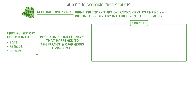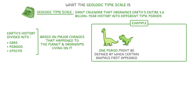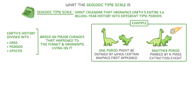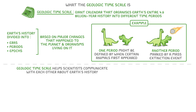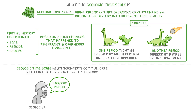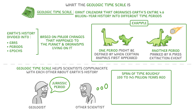For example, one period might be defined by when certain animals first appeared, whilst another period might be marked by a mass extinction event. A really useful thing about the geologic timescale is that it helps scientists communicate with each other about Earth's history. For instance, when a geologist says Jurassic period, other scientists will know they're talking about the span of time roughly 200 to 145 million years ago when dinosaurs dominated the land.